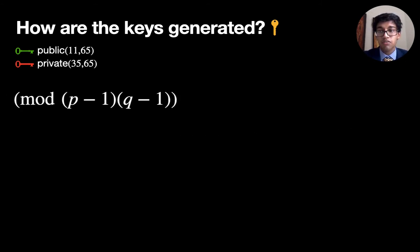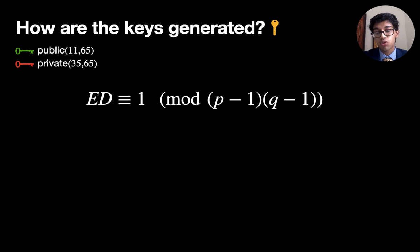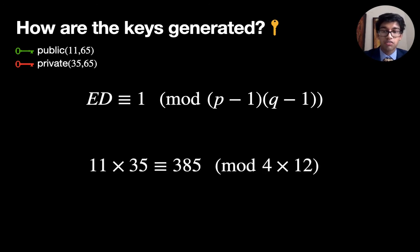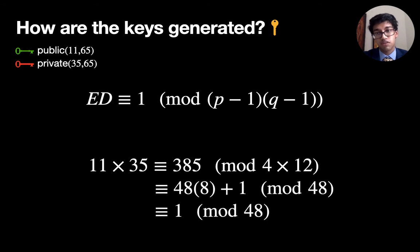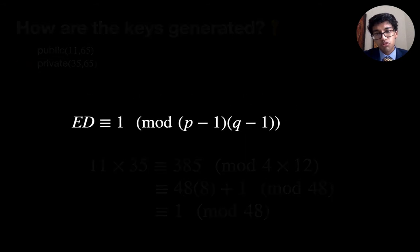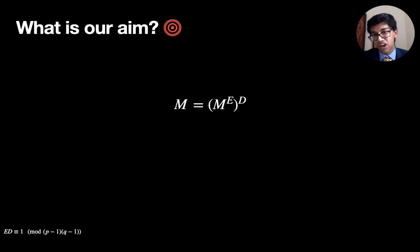To figure out our encryption and decryption constants, we figure out two numbers that have a remainder of one after division by p minus one, q minus one. So here I chose 11 and 35, that's 385. And that gives a remainder of one after division by 48.